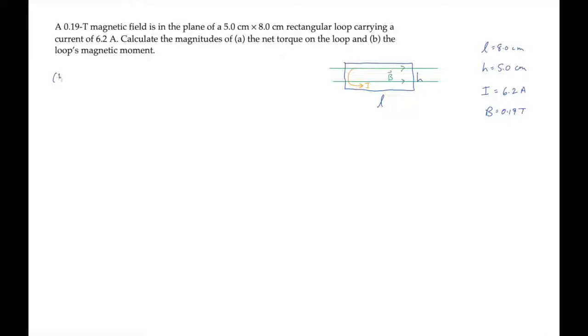We can start by solving part B, finding the magnitude of the loop's magnetic moment. The magnetic moment is a vector equal to the current I times the area vector A. That vector has a magnitude of I times the loop's area, its length times its height, which we can calculate finding 2.5 times 10 to the minus 2 amp meter squared.